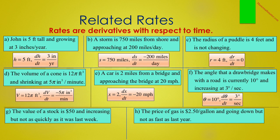In F, the angle that a drawbridge makes with a road is currently 10 degrees and increasing at 3 degrees per second. Therefore theta equals 10 degrees, and dθ/dt equals 3 degrees per second.